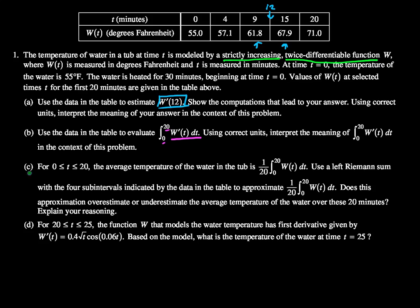All right, part c. It says for 0 is less than or equal to t is less than or equal to 20, so if times 0 to 20, the average temperature in the water tub is 1 over 20 times the integral from 0 to 20 of W(t) dt. We know this is the average value from 0 to 20 of W(t).